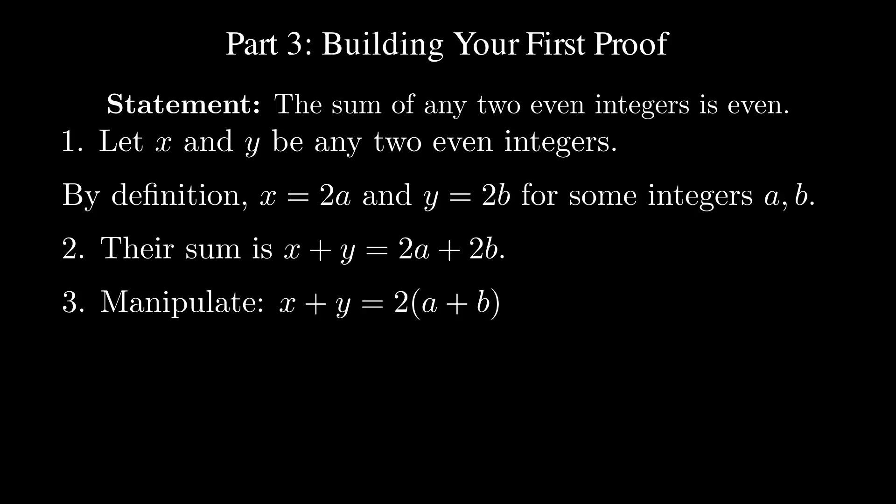Since a and b are integers, their sum is an integer. In other words, a plus b is an integer, and 2 times a plus b is even by definition.